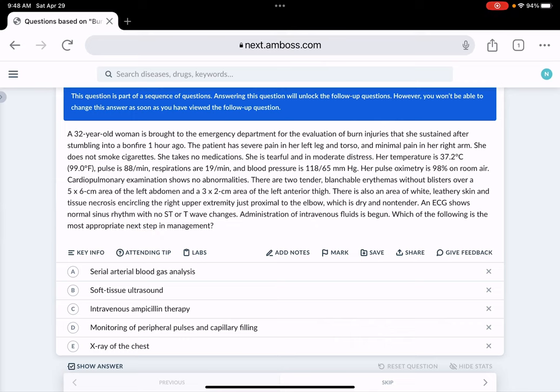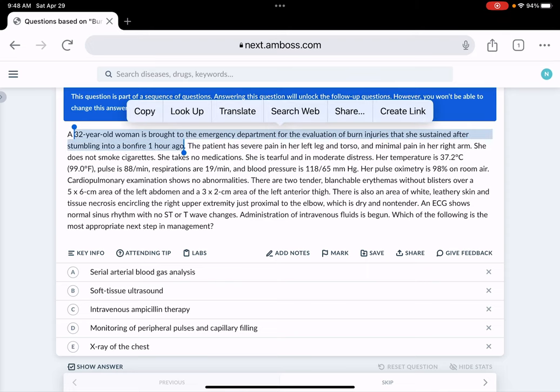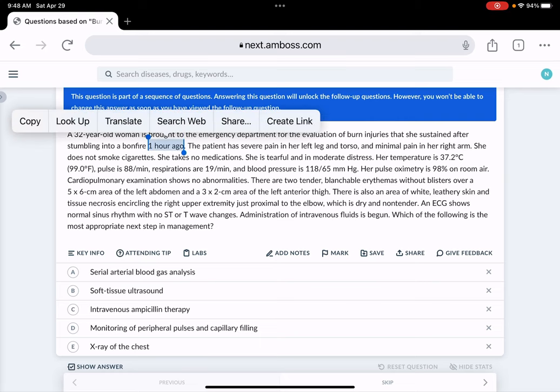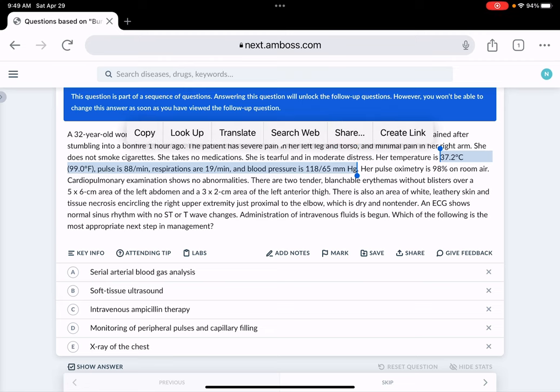What's going on here is a 32-year-old woman brought to the ER for evaluation of burn injuries that she sustained in a bonfire one hour ago. The timing of injury is very important. The patient has severe pain in her left leg and torso and minimal pain in her right arm. She does not smoke, tearful and in moderate distress.